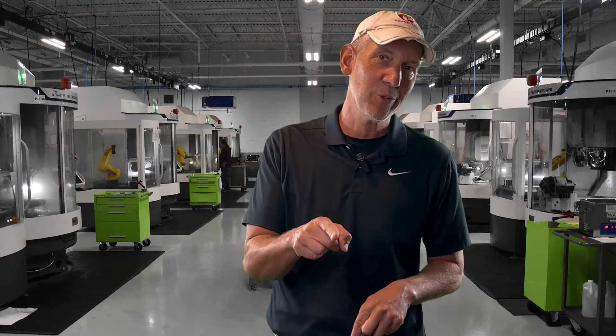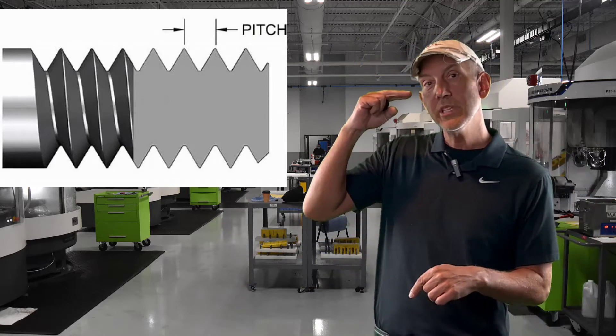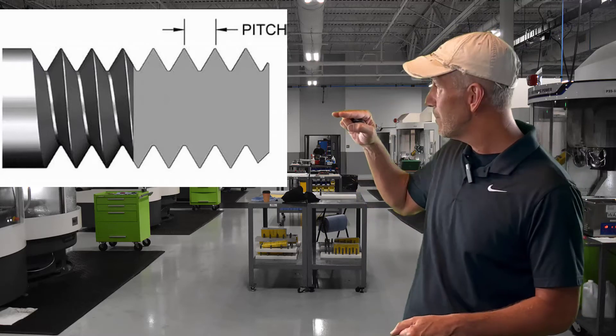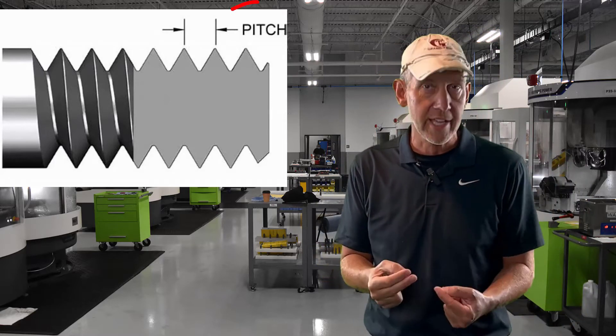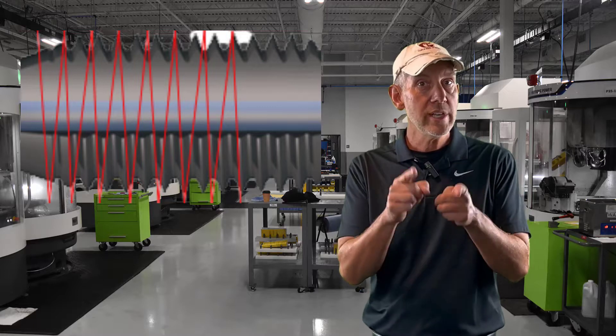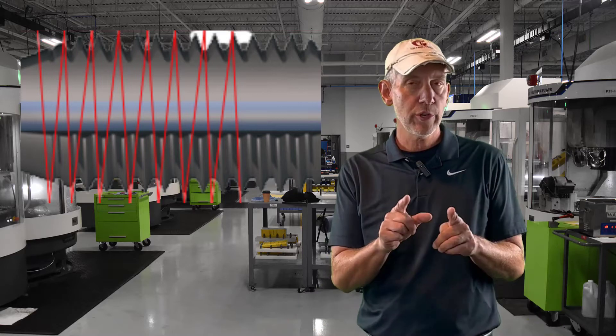Let's quickly talk about pitch — and I mean pitch on a thread, not on a ball field; this is a cutting tool show. The pitch is very important because it's the distance between each one of those lobes, which in this case are 60 degrees. A tap has a continuous pitch, and that's what puts those threads on. So now let's talk about what the difference is with a threadmill versus a tap.